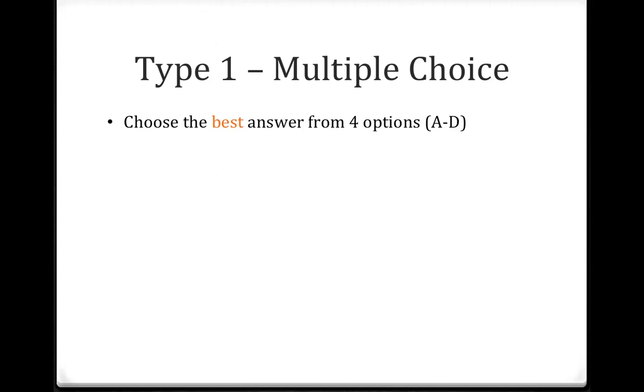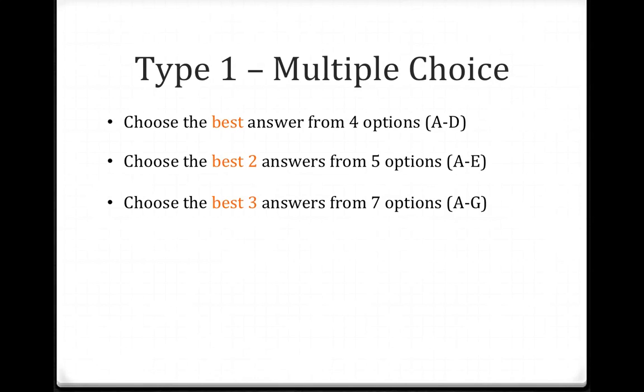The first type is multiple choice. You have to choose the best answer from four options. Sometimes it will ask you to choose from four options, or you might have to choose the best two answers from five options, or even you will be asked to choose three best answers from seven options. Seven options is the maximum.